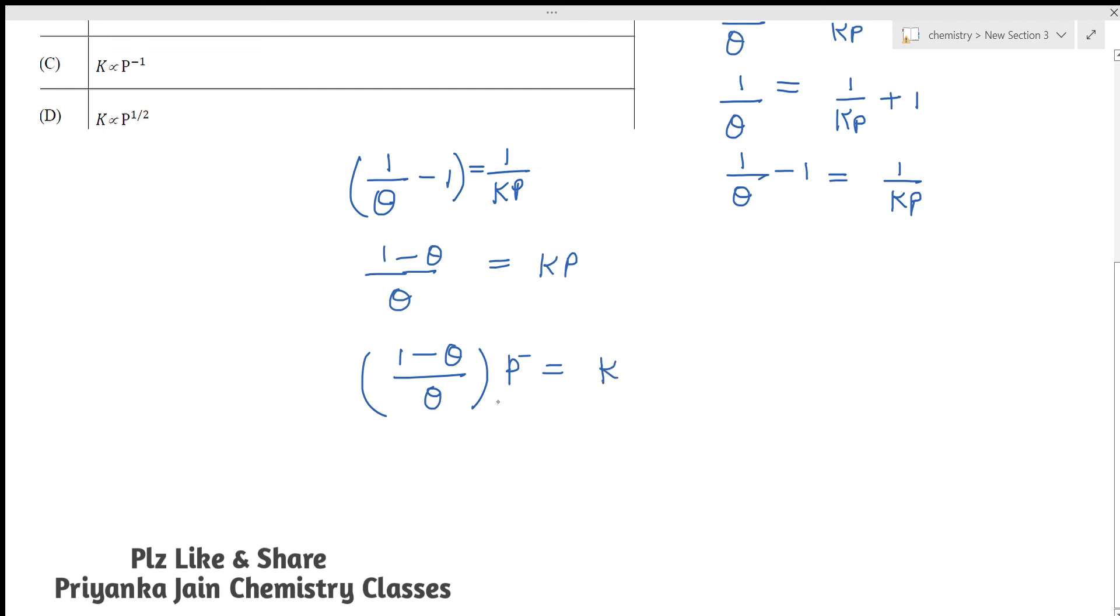So now if you are seeing this, you can see K is directly proportional to P inverse 1. This is P inverse 1. So this is your answer. K is directly proportional to P inverse 1. This is given in option number C. K is directly proportional to P inverse 1. This will be your answer.